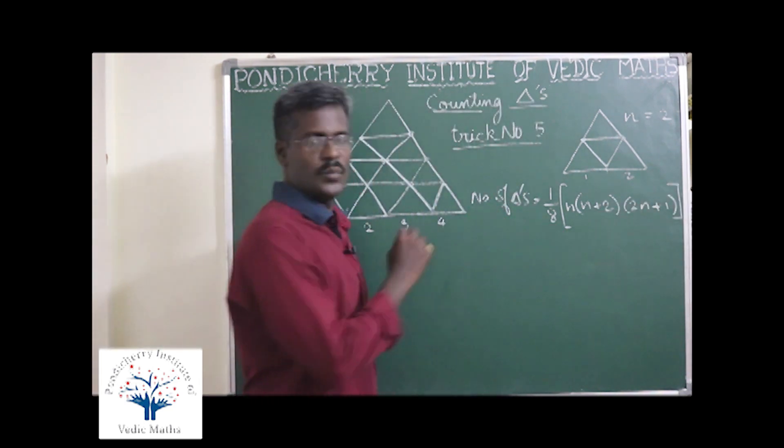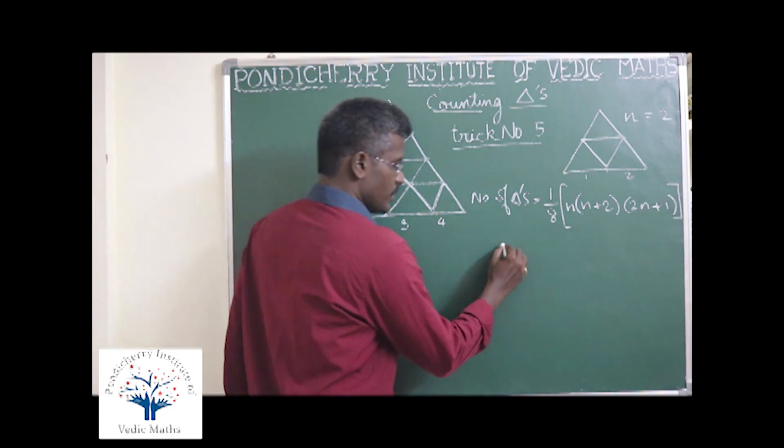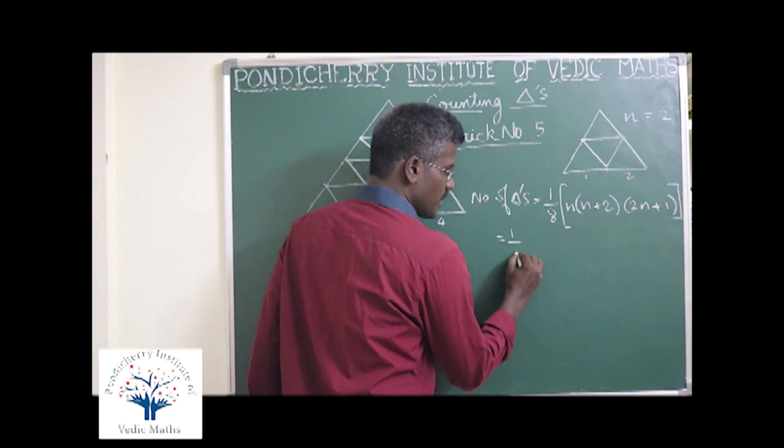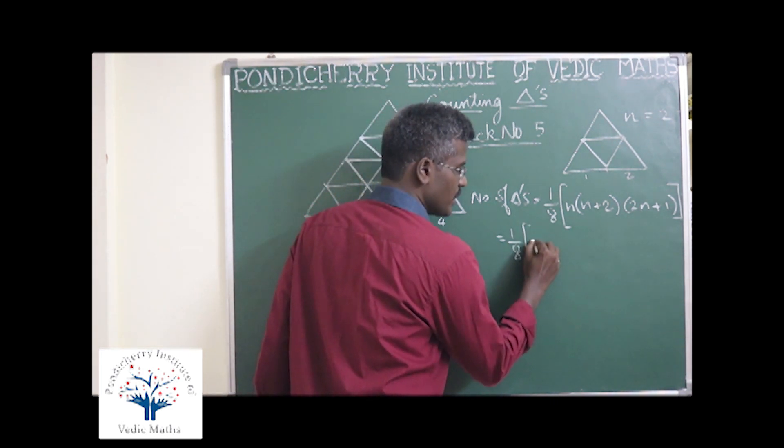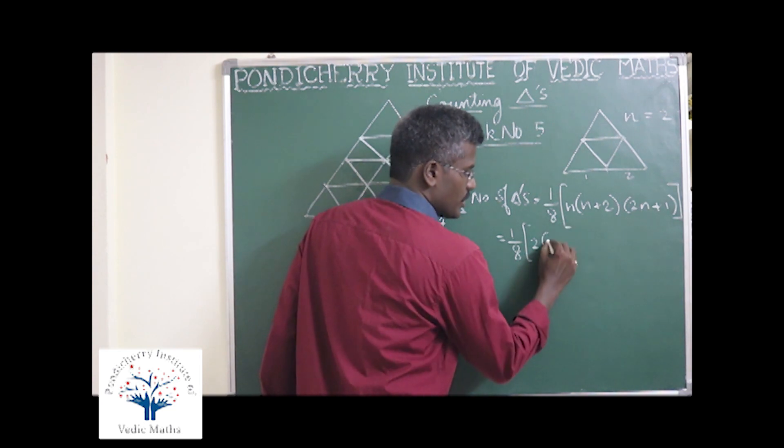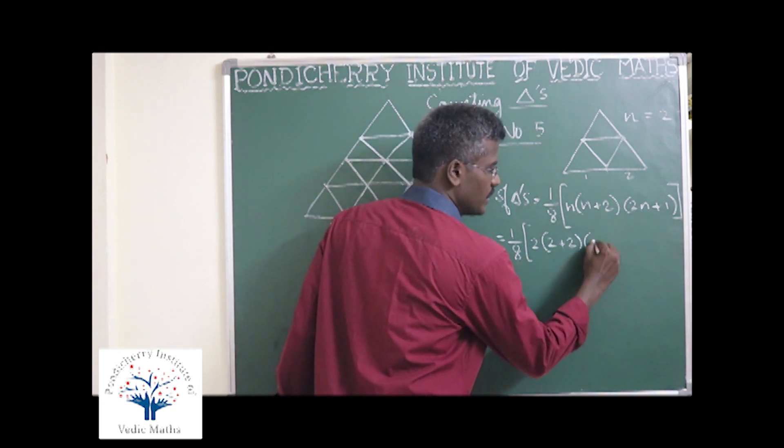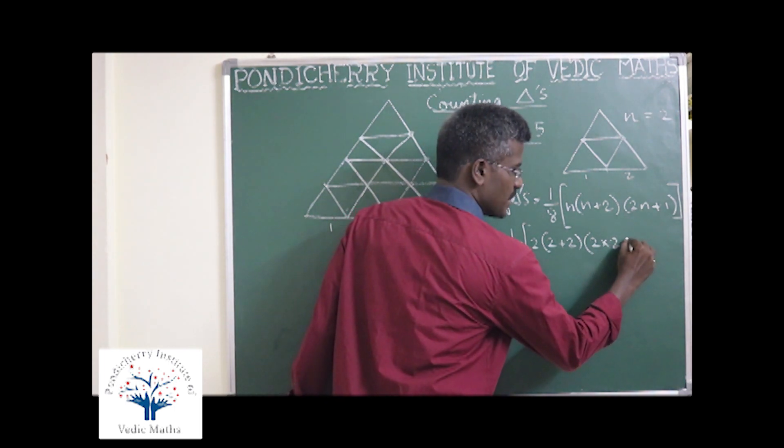In the formula we will substitute. By just substituting, n is equal to 2, we get 2 plus 2 and 2 into 2 plus 1.